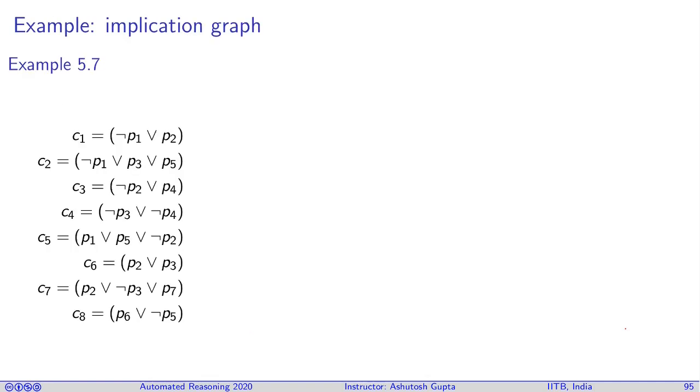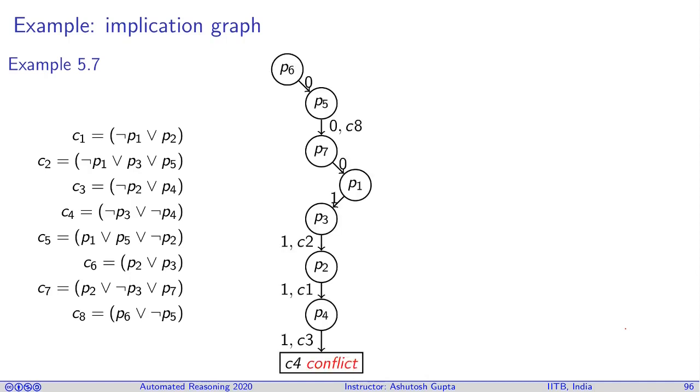So let's look at an example. We had this formula in our past example. We had this run which we did in the previous video. We reached a conflict state. Now let's draw an implication graph for this run. The implication graph is built as we assign values to variables or as literals become true. After making the first decision, not p6 becomes true, that corresponds to this decision. Now because of clause c8 I have to set p5 to 0. So p6, this literal is false, so this has to be made true. Therefore, not p6 implies not p5. So that's the edge being added.